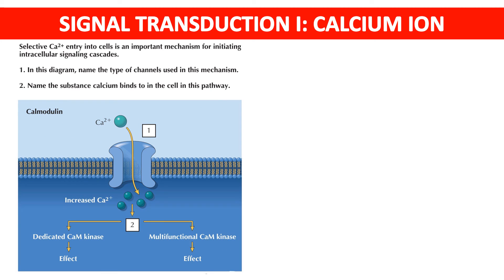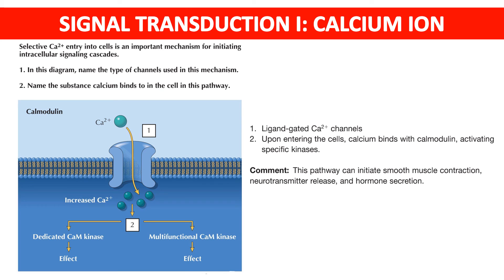Signal transduction — calcium ions: selective calcium ion entry into the cell is an important mechanism for initiating intracellular signaling cascades. The type of channel used in this mechanism is a ligand-gated calcium ion channel. Upon entering the cell, calcium binds with calmodulin, activating specific kinases. This pathway can initiate smooth muscle contraction, neurotransmitter release, and hormone secretion.